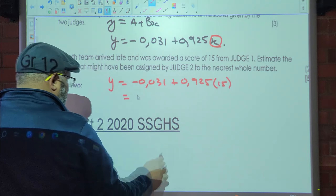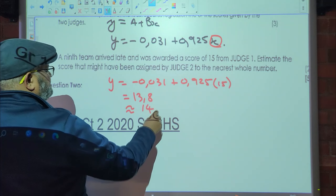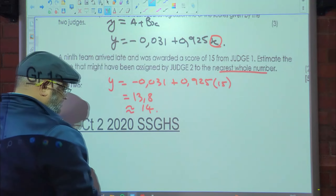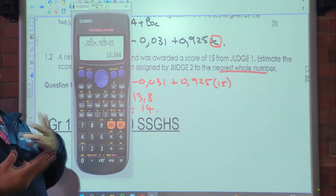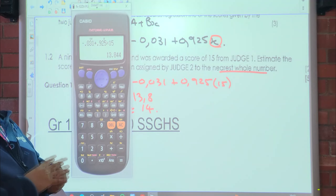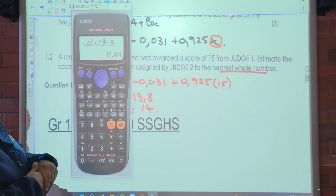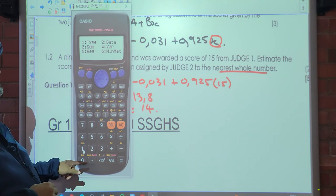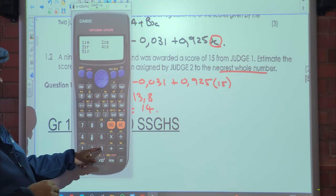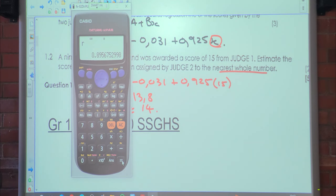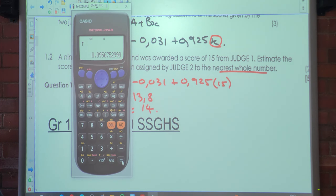So it's approximately 14. As you can see, they are within the same range. For the correlation coefficient between the two judges, press shift 1, 5, regression, 3. The value is very strong and positive, which means as one judge's score increases the other also increases. So there is a strong positive correlation between the two judges' scores.